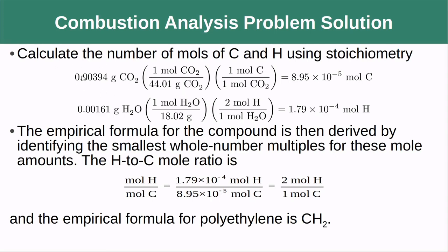We take the mass of CO₂ produced and divide by its molar mass to find the moles of CO₂. Since there is one mole of carbon for every one mole of CO₂, there were 8.95 × 10⁻⁵ moles of carbon in that sample. We then take the mass of H₂O, divide by its molar mass, and use stoichiometry — remembering there are two moles of hydrogen for every one mole of water — to find 1.79 × 10⁻⁴ moles of hydrogen. The empirical formula is derived by finding the smallest whole number ratio: dividing gives a 2:1 ratio of hydrogen to carbon, so the empirical formula of polyethylene is CH₂.